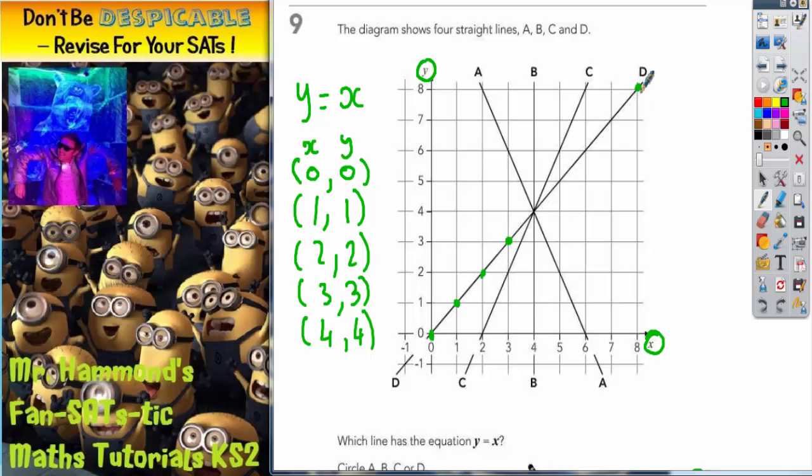Just as a further check we could pick this coordinate up here. And this coordinate is 8 across 8 up. Which also has X and Y both being the same. So it's got to be line D.